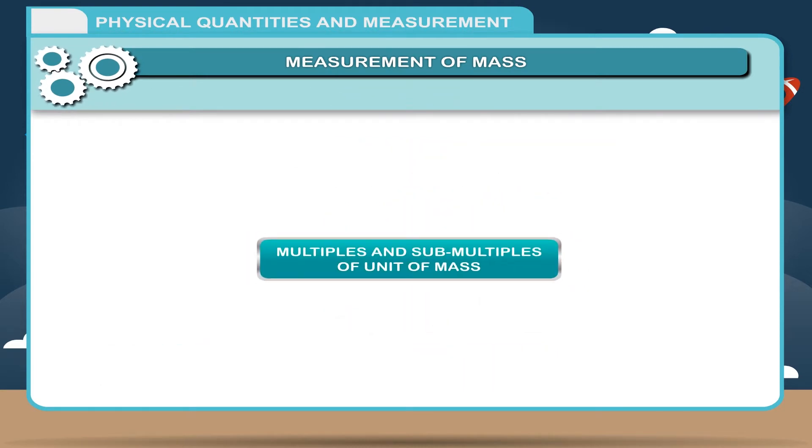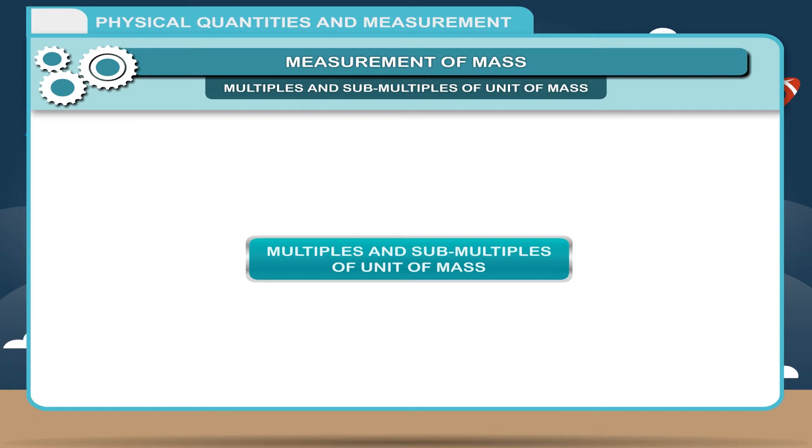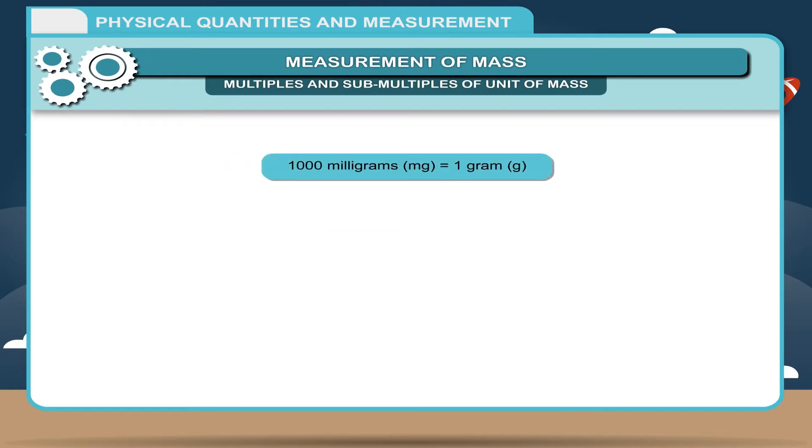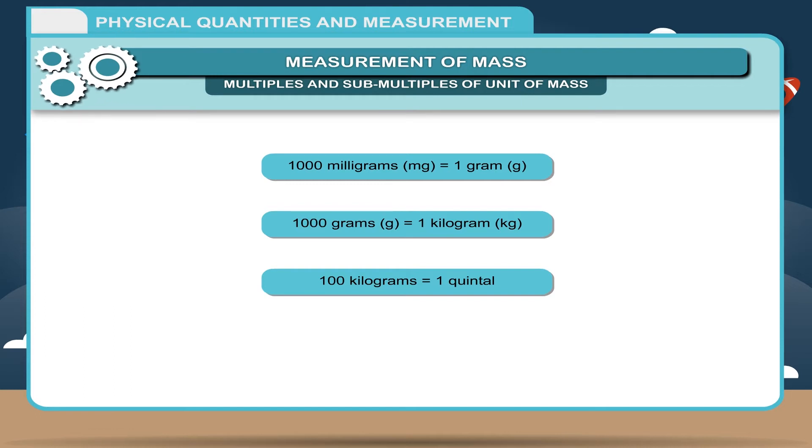Multiples and submultiples of unit of mass: 1,000 milligrams (mg) is equal to 1 gram (g). 1,000 grams (g) is equal to 1 kilogram (kg). 100 kg is equal to 1 quintal. 10 quintals is equal to 1 metric tonne.